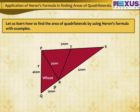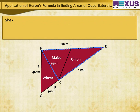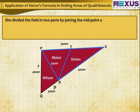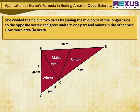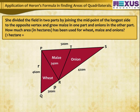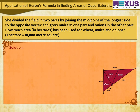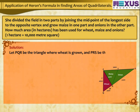She divided the second field into two parts by joining the midpoint of the longest side to the opposite vertex, and grew maize in one part and onions in the other part. How much area in hectares has been used for wheat, maize, and onions? Note: 1 hectare = 10,000 m². Solution: Let PQR be the triangle where wheat is grown and PRS be the field divided into two parts by joining R to the midpoint T of PS.